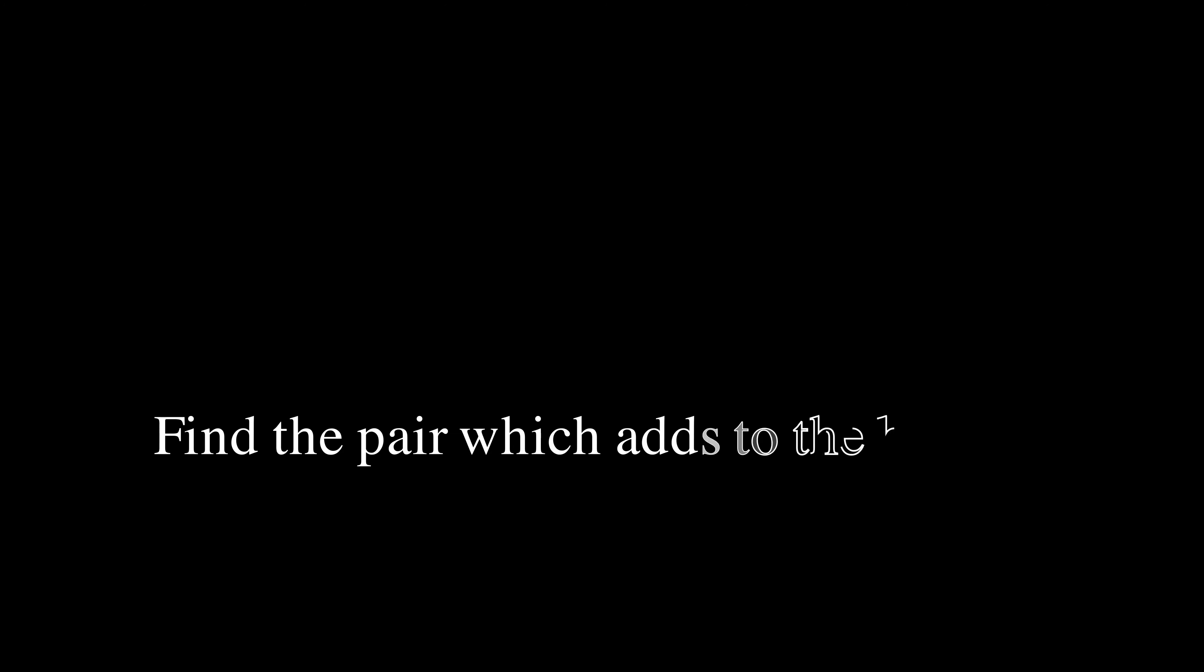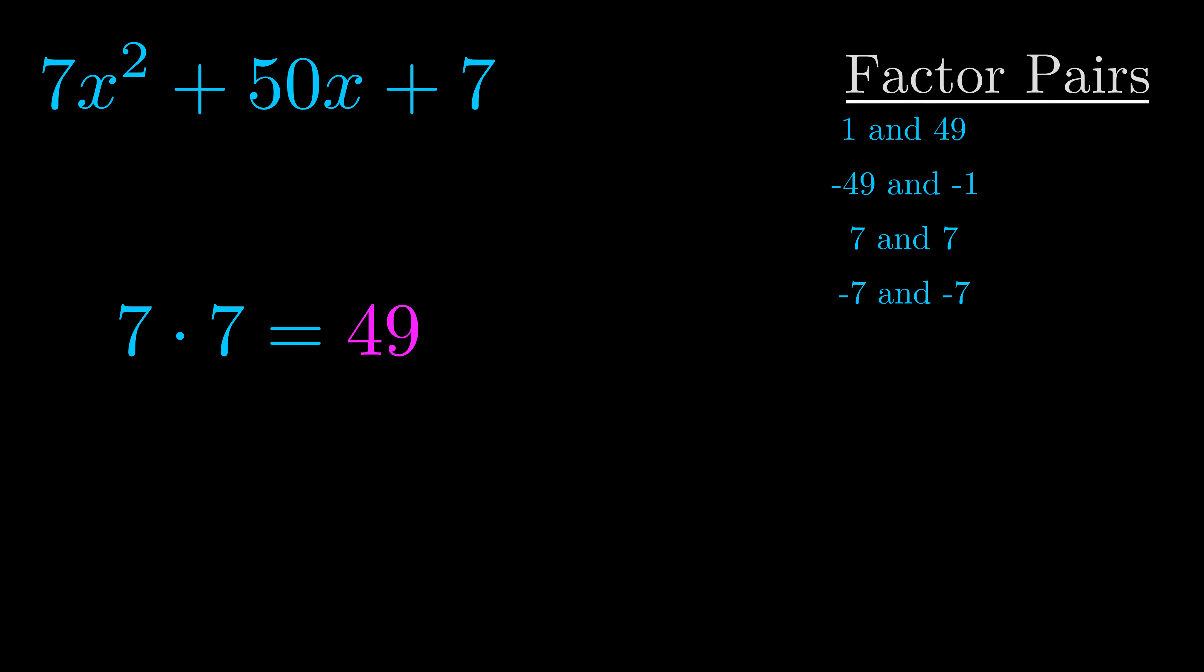The b value is the coefficient on the x term. That's the middle term, the one that we haven't done anything with yet. And really this is the only factor pair that we need.